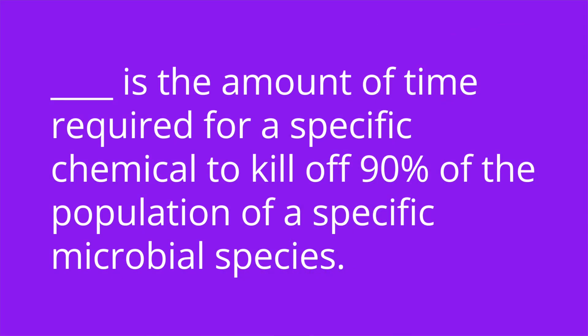Question four: blank is the amount of time required for a specific chemical to kill off 90% of the population of a specific microbial species. The answer is decimal reduction time, or DRT.